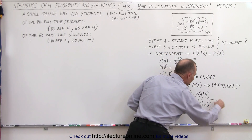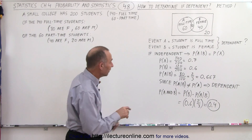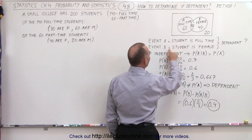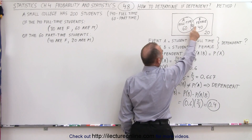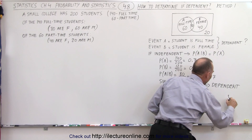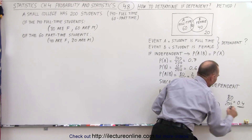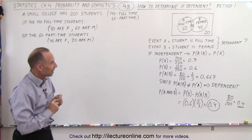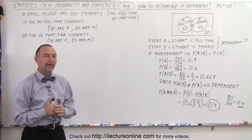This is the probability of A and B together. The probability of A and B means the student is both full-time and female. Notice that is equal to 80 — that's where the two overlap — which is 80 out of 200, and 80 out of 200 is indeed 0.4. So you can see that this matches our Venn diagram, and that's how you can determine if there are dependent or independent events.